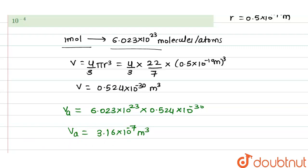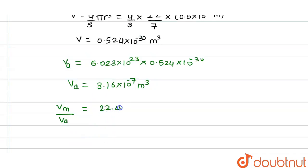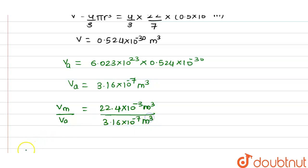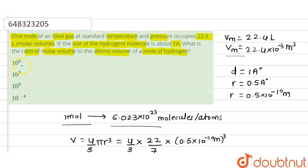Now we can calculate the ratio of molar volume to atomic volume. Molar volume Vm equals 22.4 into 10 to the power minus 3 meter cube, and atomic volume Va equals 3.16 into 10 to the power minus 7 meter cube. Dividing these, the ratio equals 7.08 into 10 to the power 4, meaning the order of this ratio is 10 to the power 4. The correct option is option A.